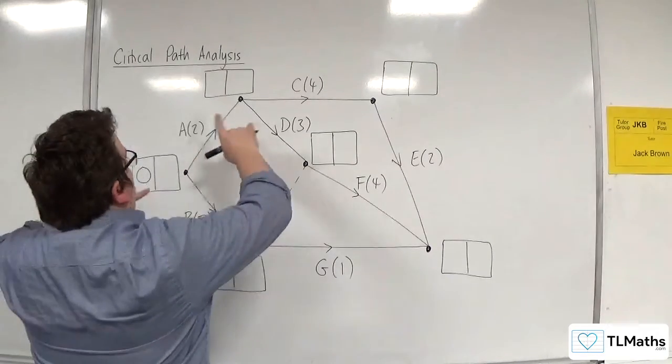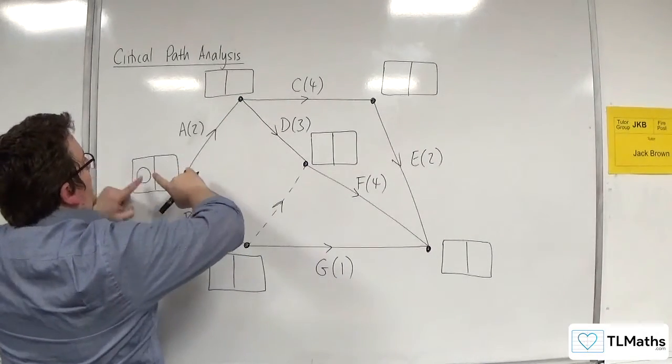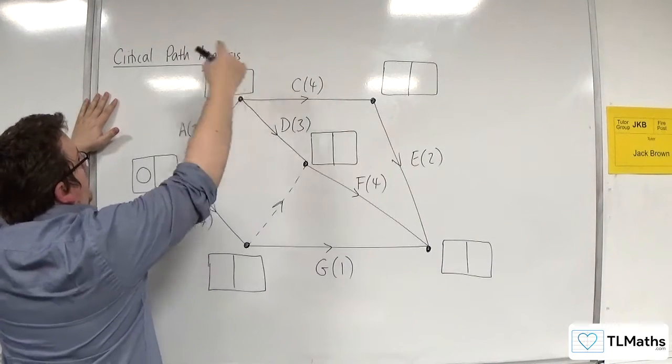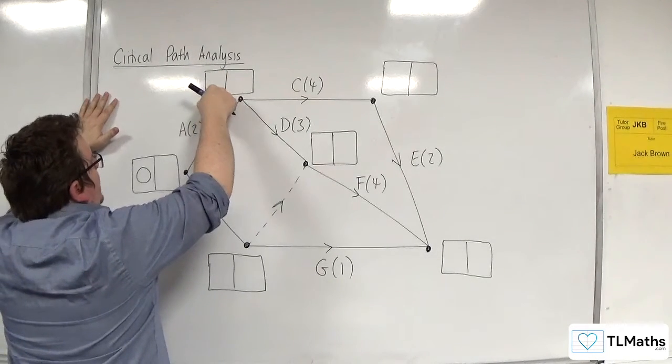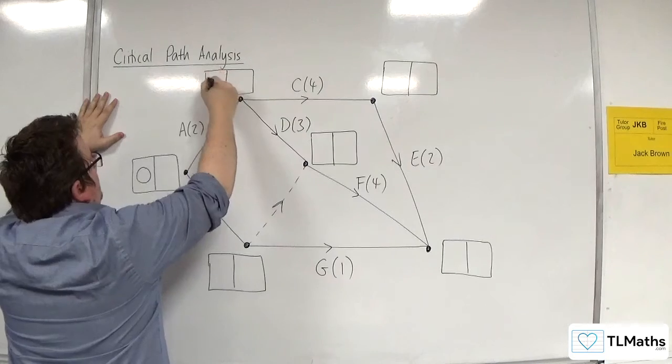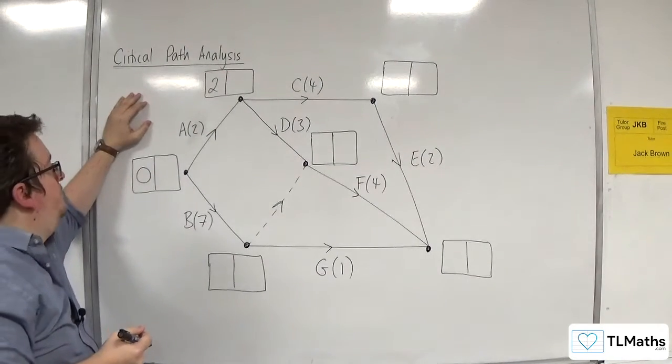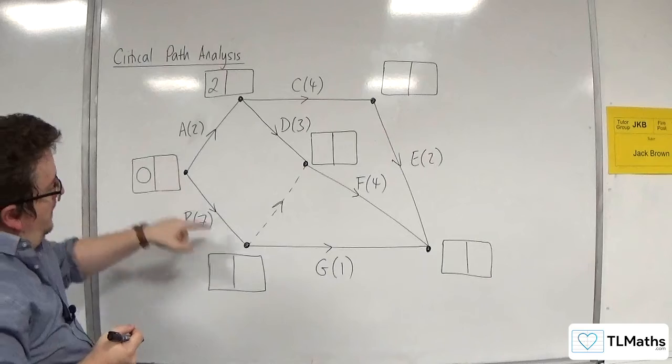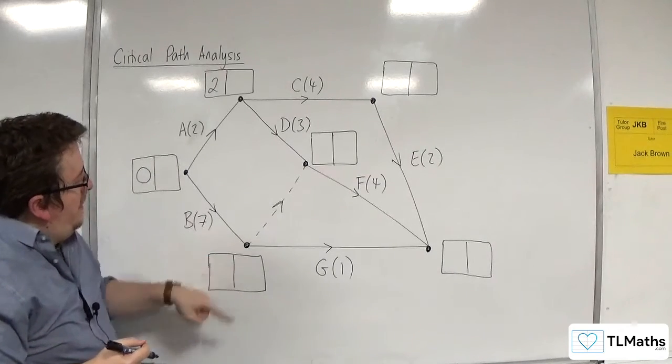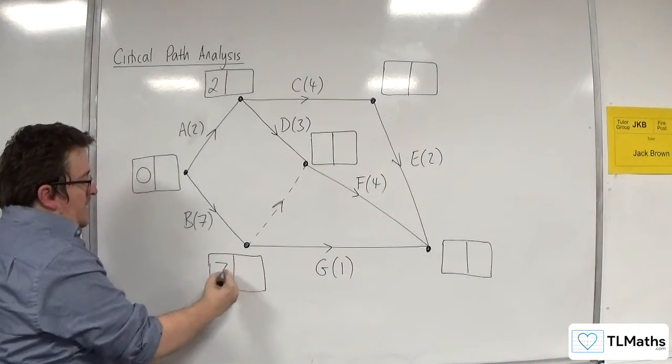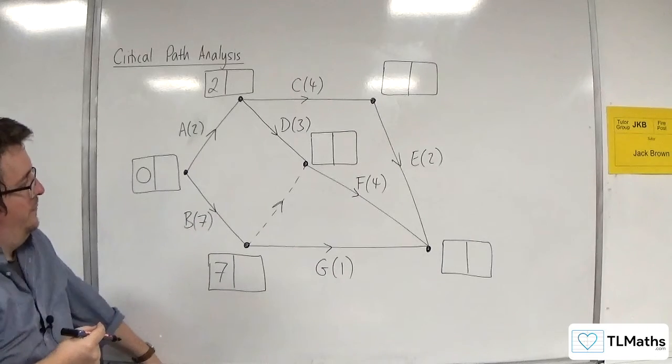So let's look at this one first. So there's only one arrow going into this event, and that's A. So the earliest time that I can get to this event is at two, because two hours have elapsed. Now, as for this one, there's only one arrow going into that one, so I can go, the earliest time I can get there is seven.